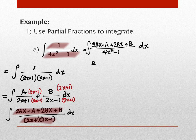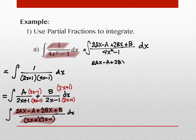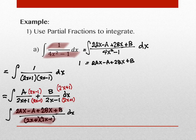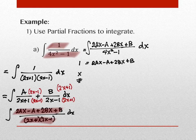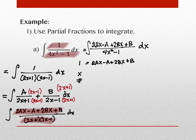So I have 2Ax + 2Bx equal to the x-terms on the left, and −A + B equal to the constants on the left. On the left-hand side there's no x, just the number 1, so the coefficient of x on the right is 0, and the constant on the left is 1. So: 2A + 2B = 0 and −A + B = 1.